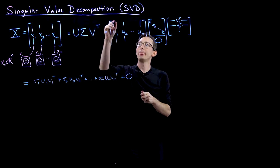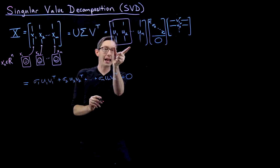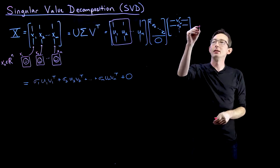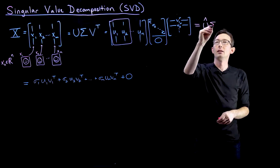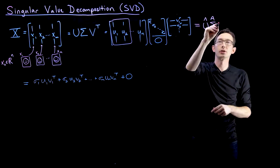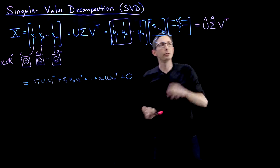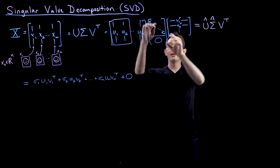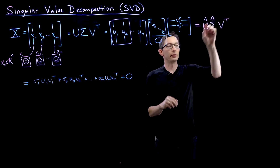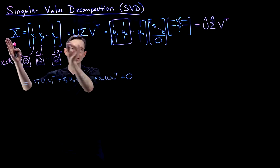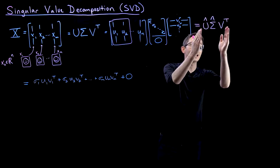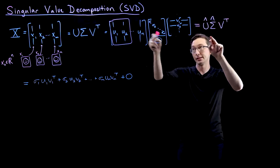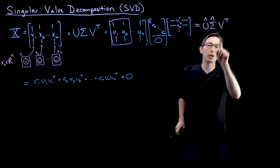That means I can select just the first M columns of U, the first M×M block of sigma, and the M×M matrix V. We call this U-hat times sigma-hat times V transpose — V didn't change at all. U-hat and sigma-hat are just the first M columns of U and the first M×M block of sigma, and this is exact. This is often called the economy SVD.